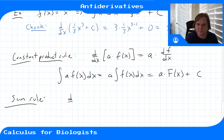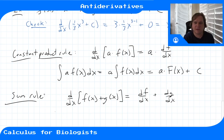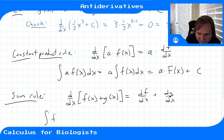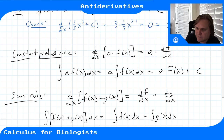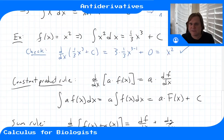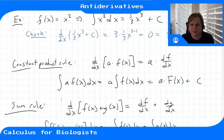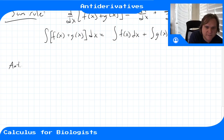The other rule is the sum rule. Just as for derivatives — d/dx of (f + g) = f' + g' — for integrals, the integral of (f(x) + g(x)) dx equals the integral of f(x) dx plus the integral of g(x) dx. With the power rule, constant product rule, and sum rule together, we can take the anti-derivative of any polynomial.